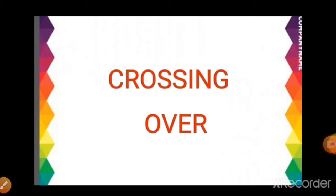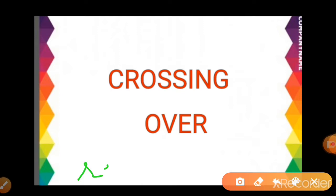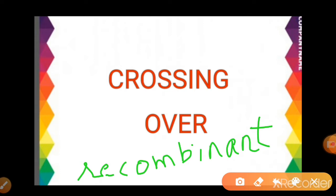Before we discuss crossing over, first of all I would like to tell you about recombination and recombinants. What is a recombinant? Recombinant or recombination means a new combination. Recombinants are those organisms which express the character of both the parents — both maternal and paternal characters. By independent assortment of chromosomes at the time of formation of gametes, we get recombinants.